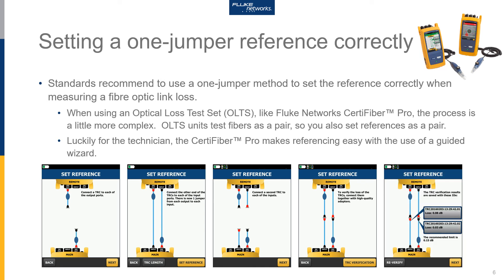Once the verification is complete, the instrument gives you a reading on the verification result, including the date, time, and the loss recorded. Our first cord set had a loss of 0.08 dB, and our second cord set had a loss of 0.03 dB. For multimode — which is what we have here — the limit is better than 0.15 dB, and these cords are good to go. For single mode when using an optical loss test set, it's 0.25 dB for the TRC validation check before you proceed to making measurements.